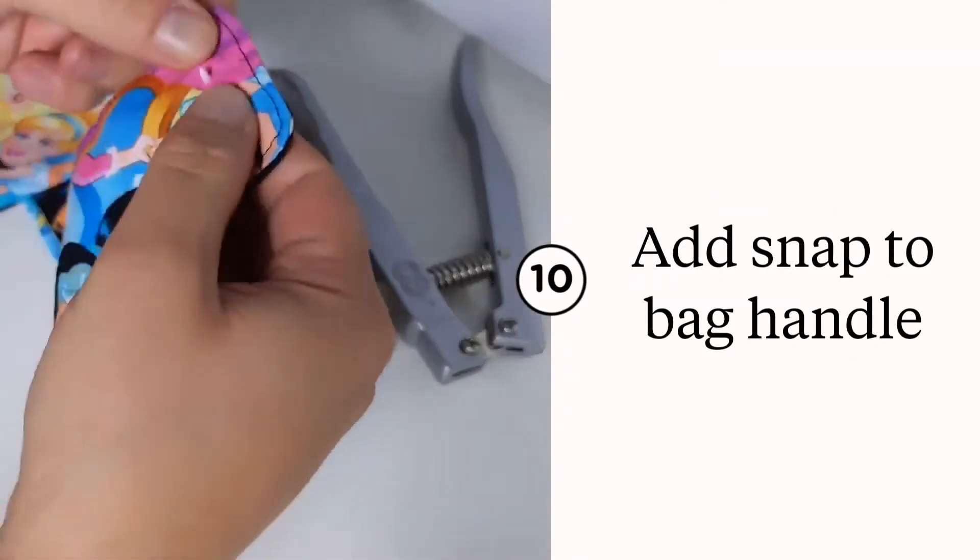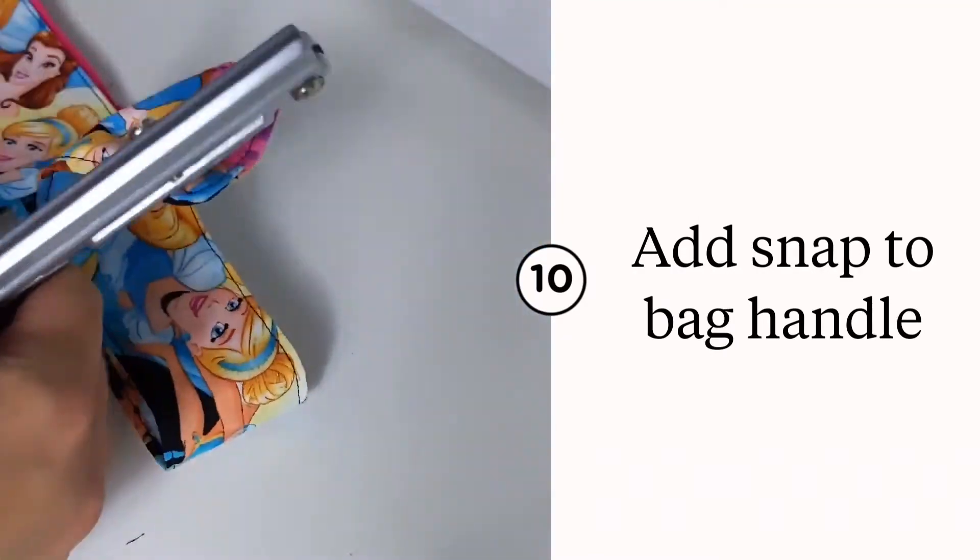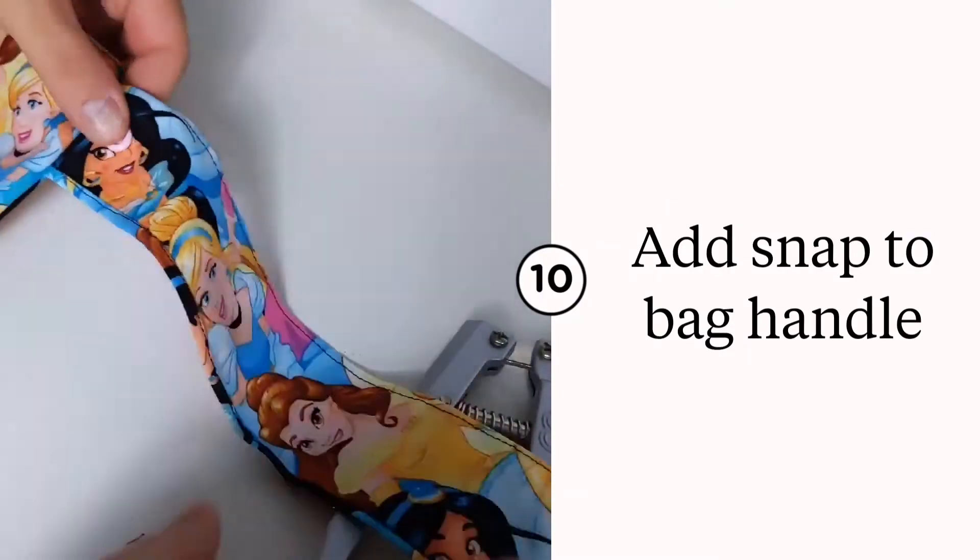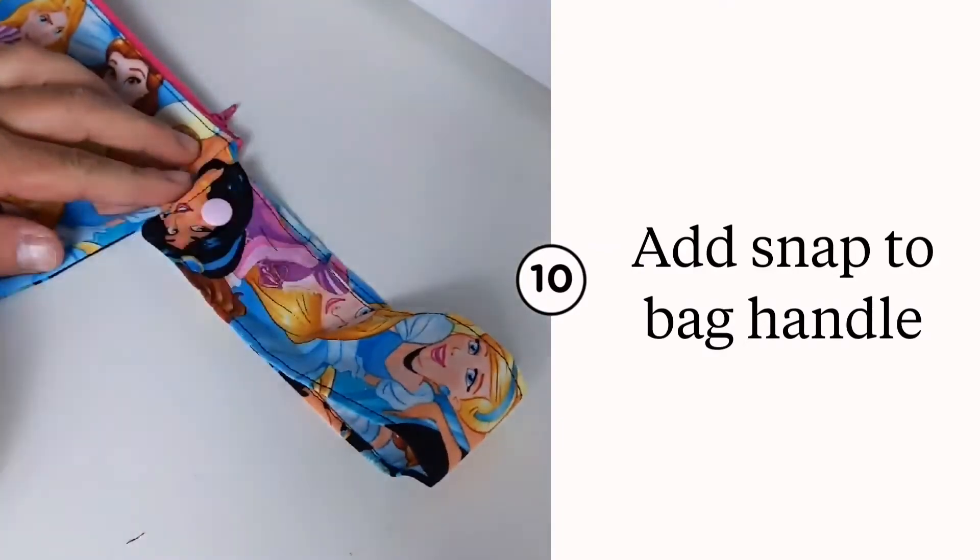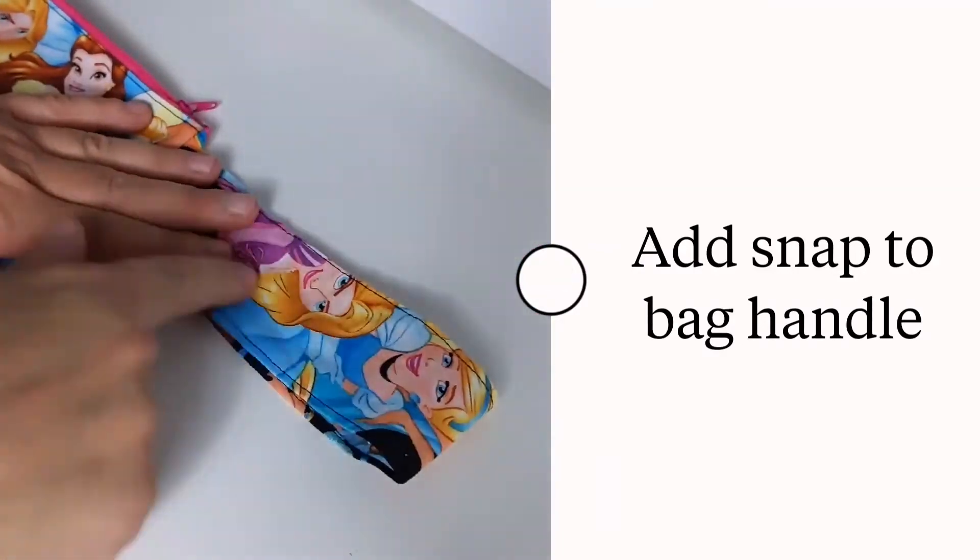Really quick, just add a snap or two snaps to the end of your bag. I have a female snap and a male snap so they can snap together. It's really quick. I have a tutorial on how to apply snaps on my YouTube channel if you're interested.